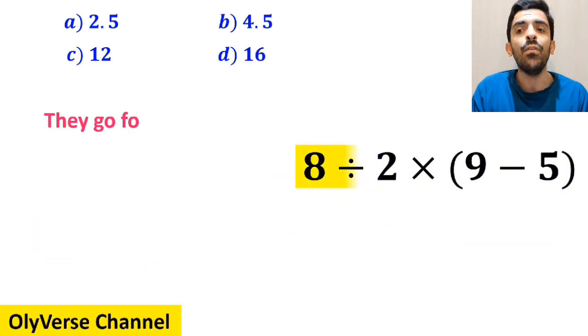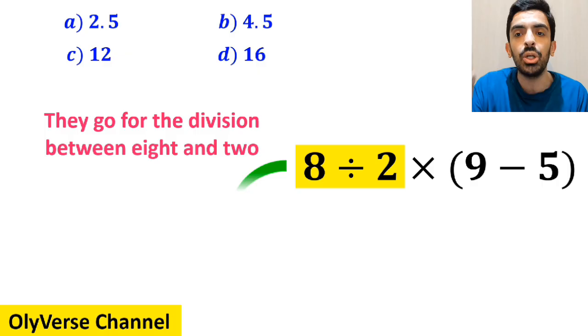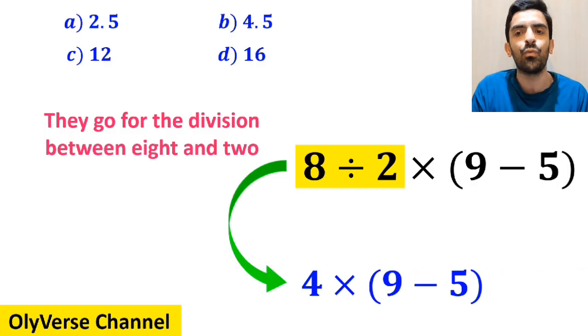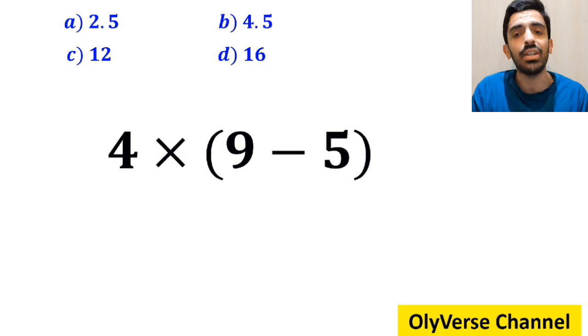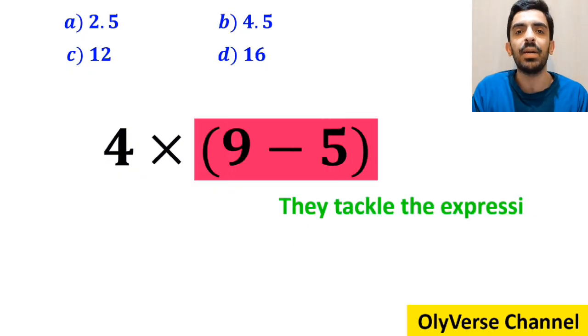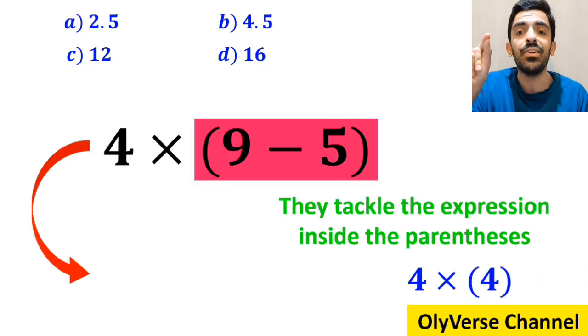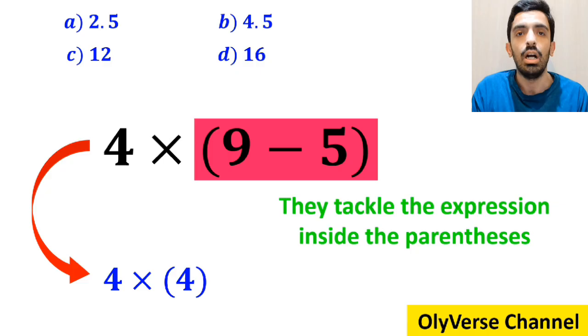In the next step, they go for the division between 8 and 2, and this expression simplifies to 4 × (9 - 5). In the final step, they tackle the expression inside the parenthesis and write it as 4 × 4, which ultimately gives them the answer 16.